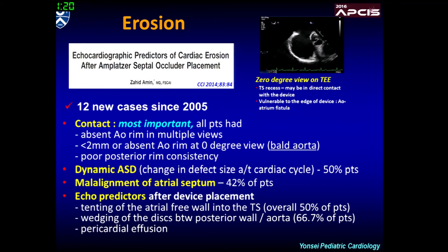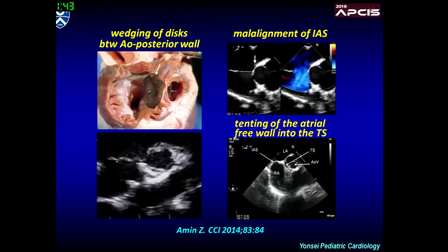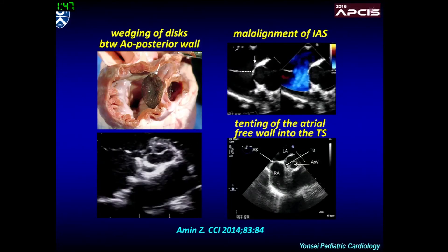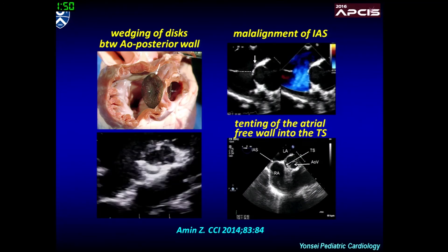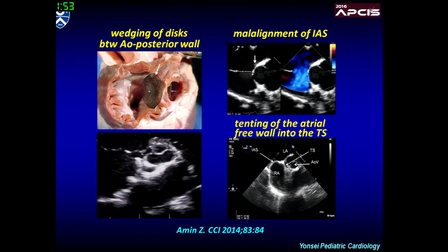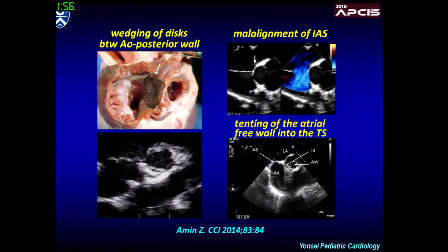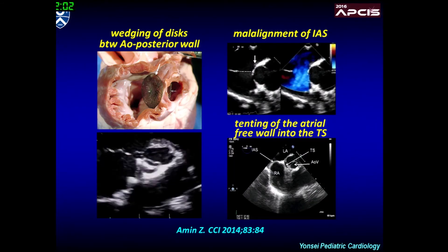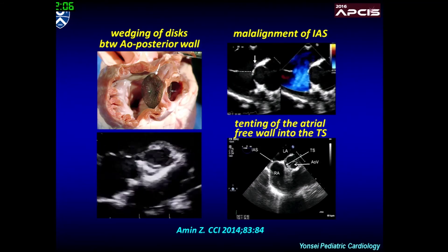He also published a paper regarding echocardiographic predictors of erosion in 2014. In this article, he provided additional insight by investigating 12 new erosion cases after his Sentinel paper published in 2004. Important shared features among patients included absent aortic rim in multiple views with bold aorta, poor posterior rim consistency, dynamic ASD, and malalignment of the septum. Echo predictors after device placement were wedging of the atrial discs between the aorta and the posterior wall, tenting of the atrial free wall into the transverse sinus, and pericardial effusion.